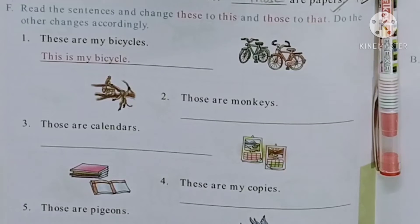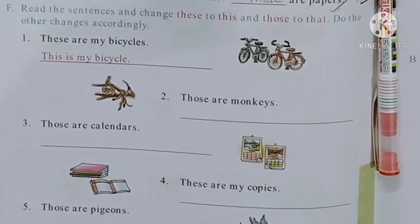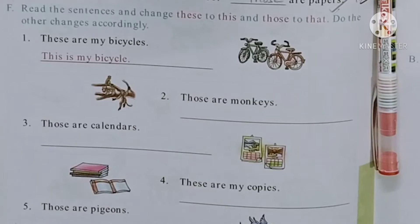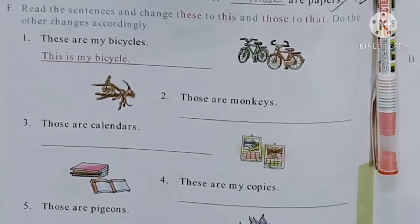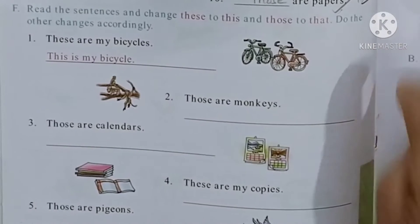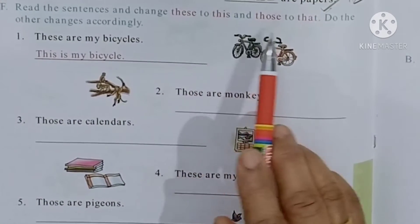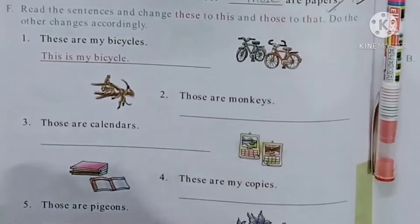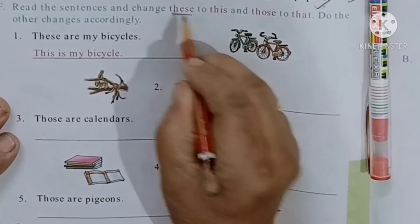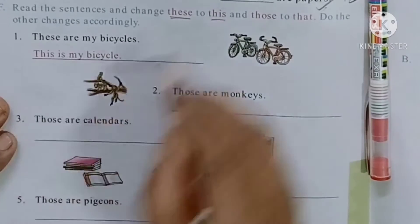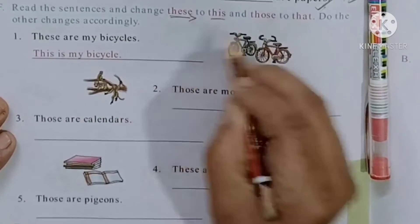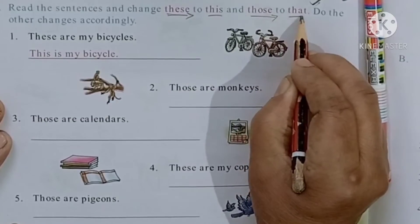Good morning class. Open up your grammar book, page number 32. Today we have to do exercise F. What you have to do is read the sentences and change 'these' to 'this' and 'those' to 'that'. When 'these' is written, change it to 'this', and when 'those' is written, change it to 'that'.